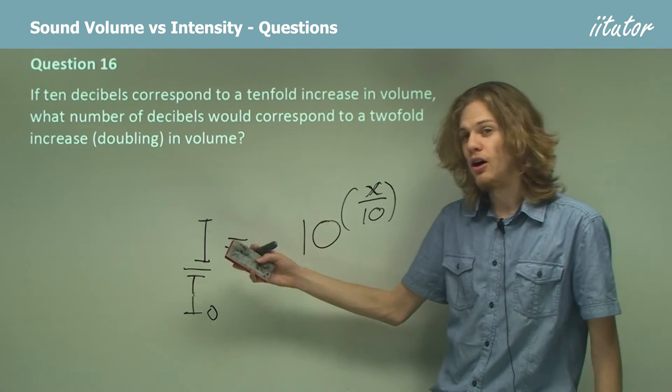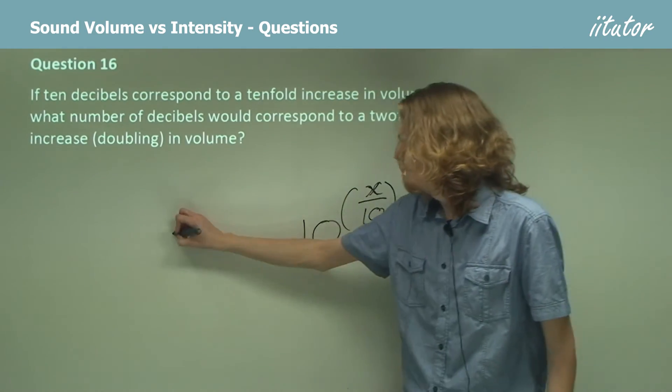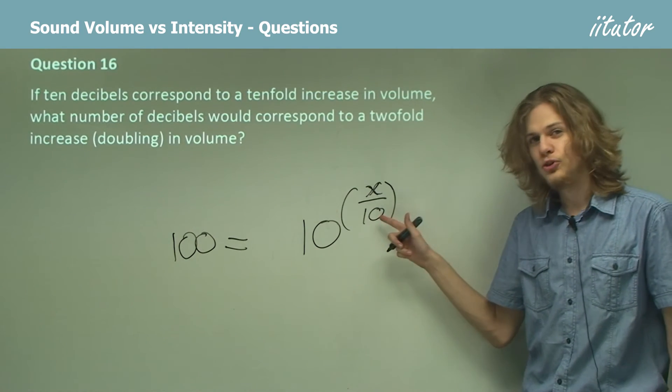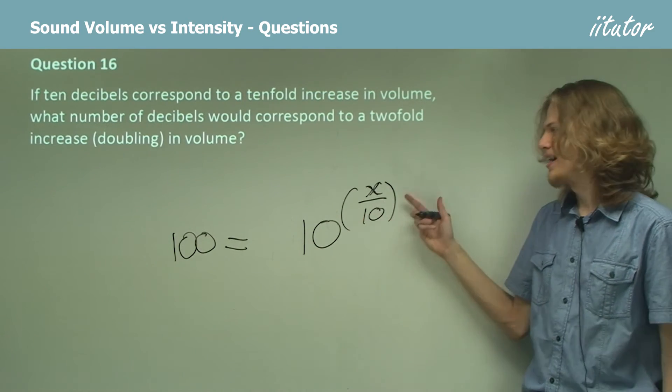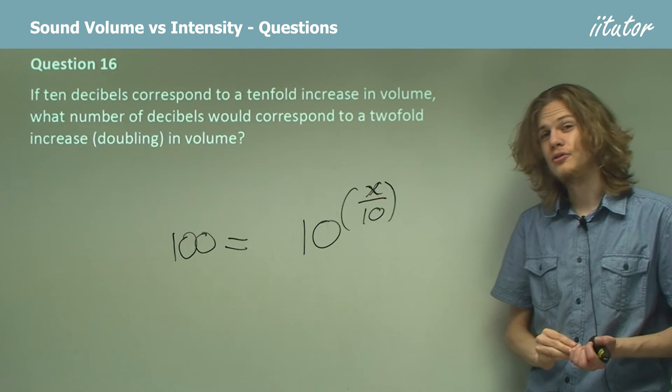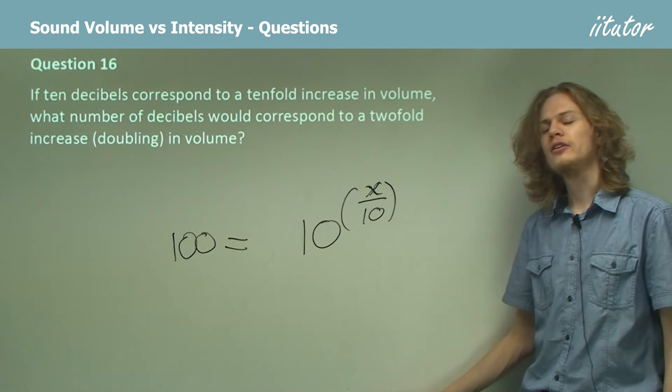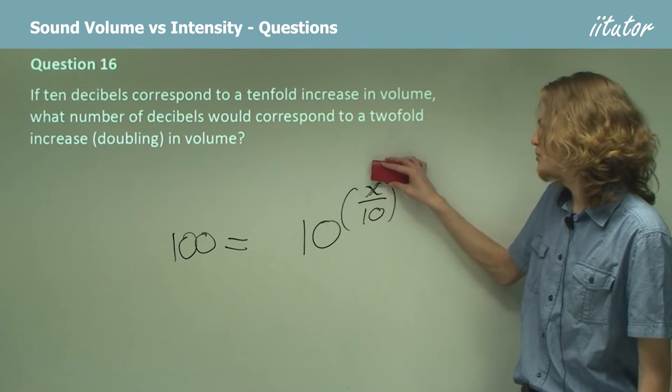If we want the increase to be 100 fold, then we need it to be 10 to the power of 2. So x over 10 is 2, x must be 20. So an increase of 20 decibels will be a factor of 100 in the intensity increase.